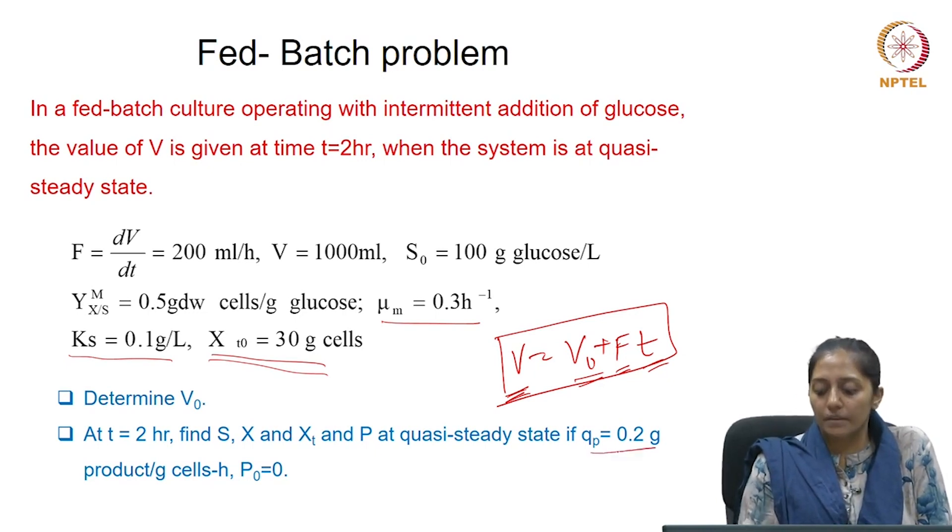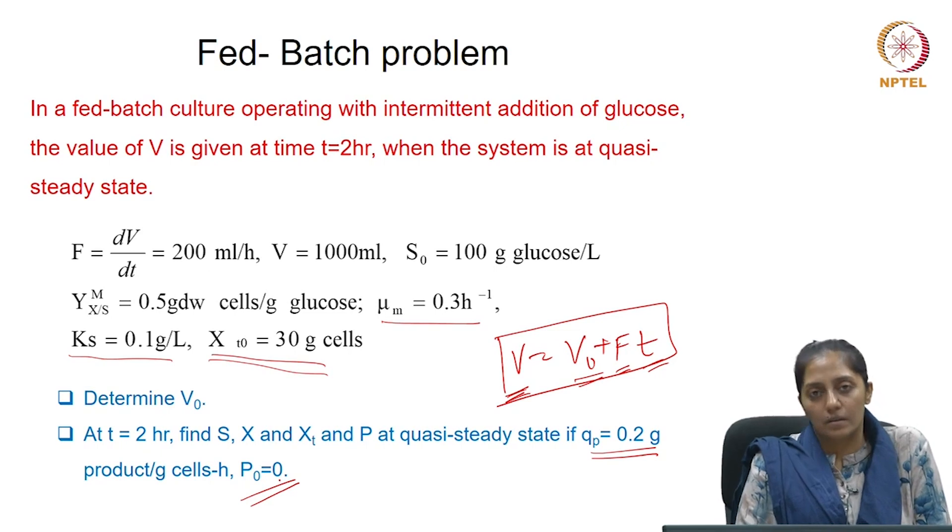The product also has to be determined given the value of specific product formation rate, and the initial product concentration at t equals 0, which means at the start of the quasi-steady state, was 0.